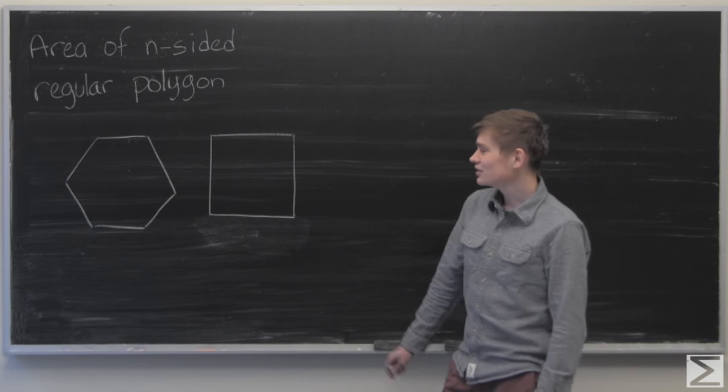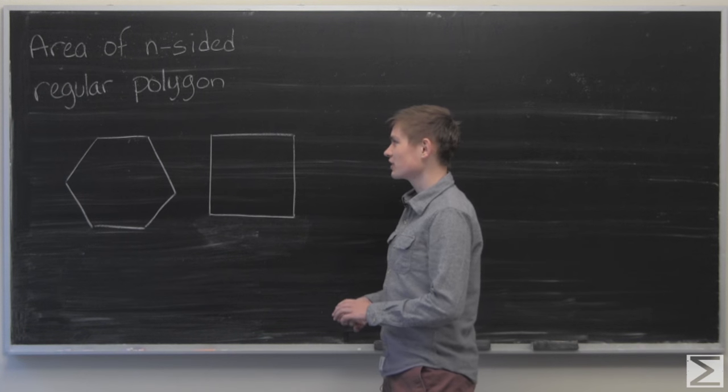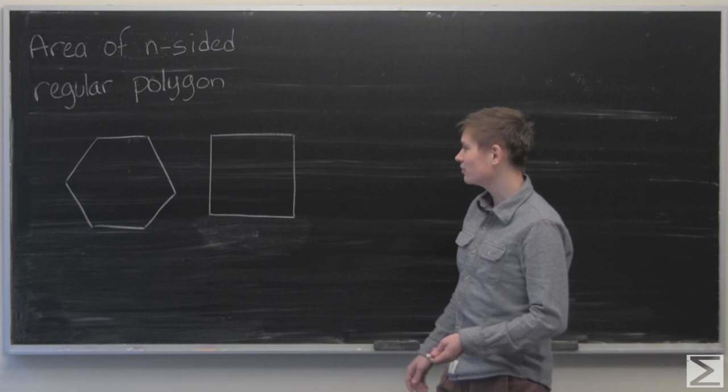This week's problem of the week was to find a formula for the area of an n-sided regular polygon, which is just a polygon with all the sides of equal length.